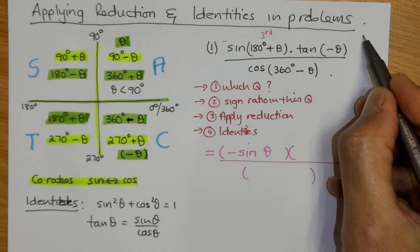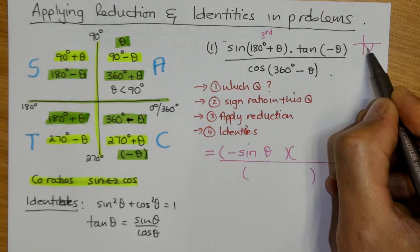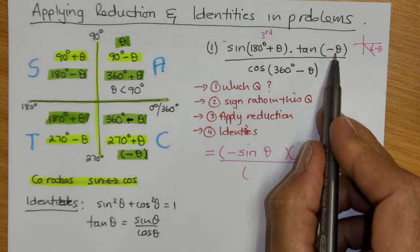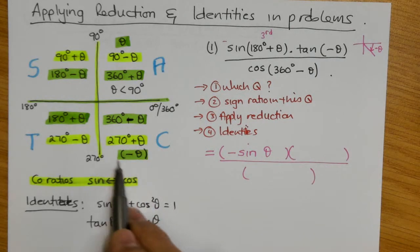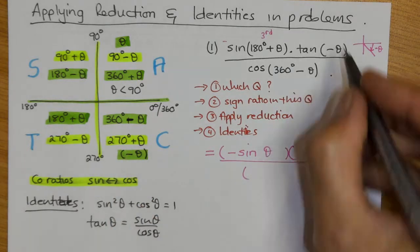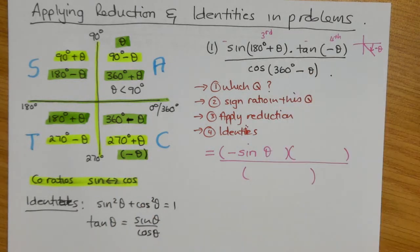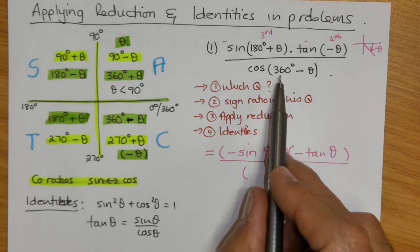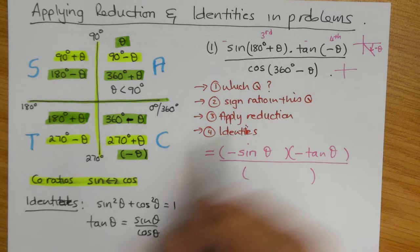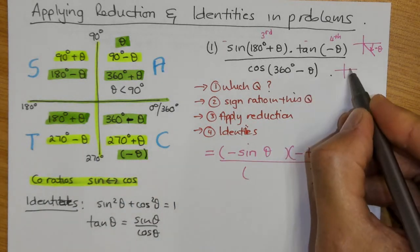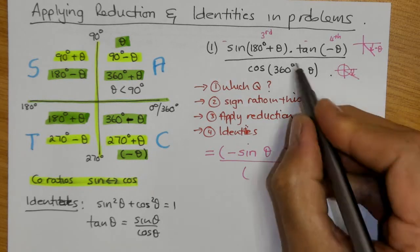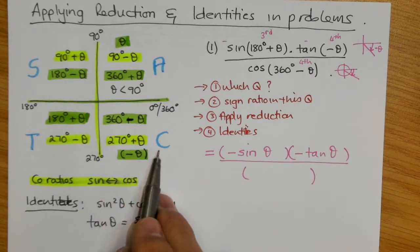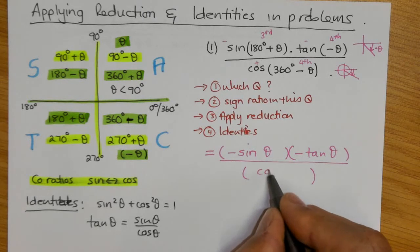For the minus theta angle: the negative indicates it's measured clockwise, so it's a fourth quadrant acute angle. In the fourth quadrant, tan is negative, so we get minus tan of theta. For 360 minus theta: 360 is anticlockwise, then we come back theta, landing in the fourth quadrant, where cosine is positive. So this becomes cosine of theta.